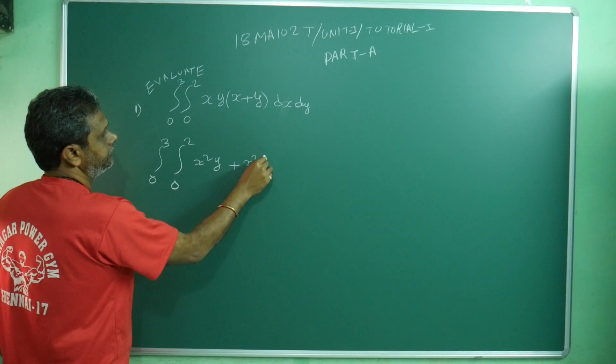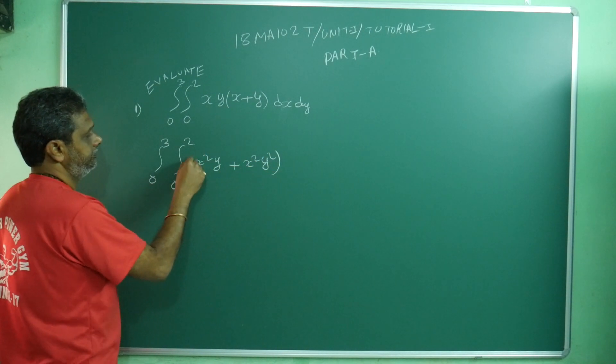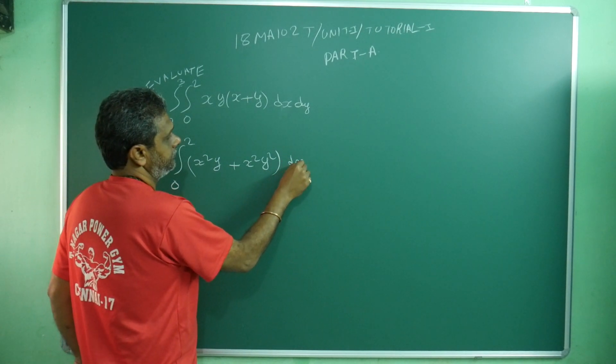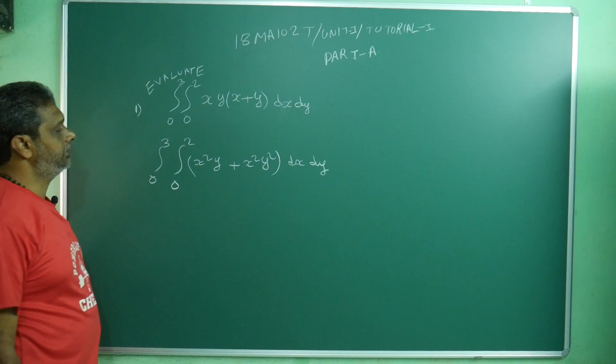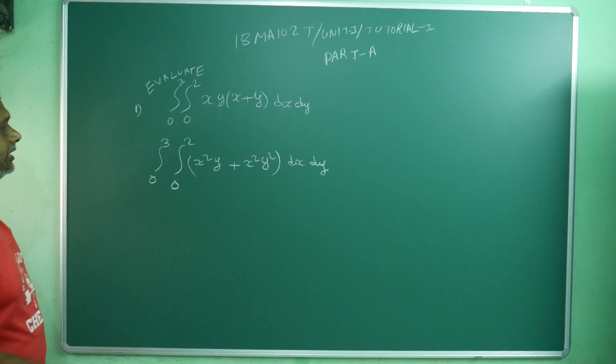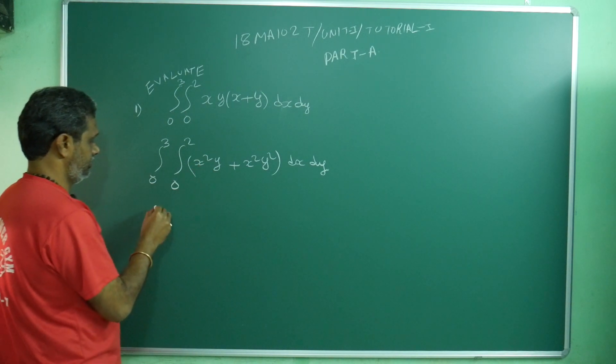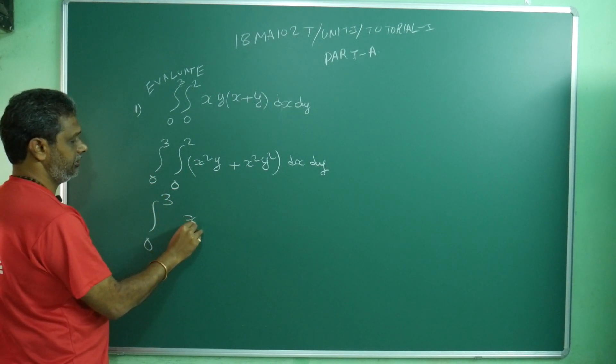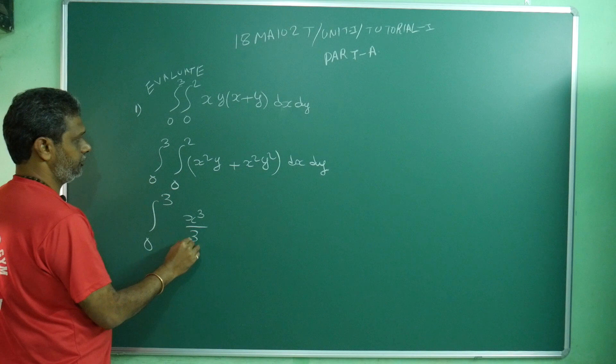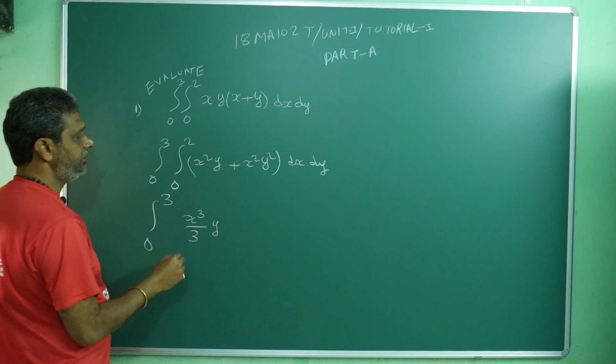Now with respect to x I am doing, so y treat as a constant. 0 to 3, x squared integration. What I will get? x cubed by 3 times y. You can keep this.